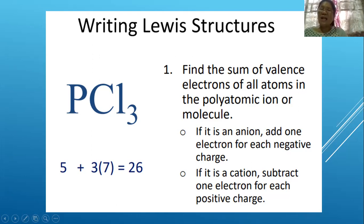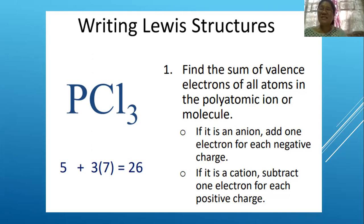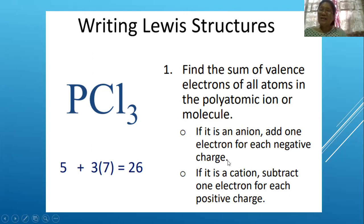The total sum of valence electrons of phosphorus trichloride is 26, meaning there will be 26 electrons that should be represented in its Lewis structure. This compound is in the form of a molecule, not a polyatomic ion.